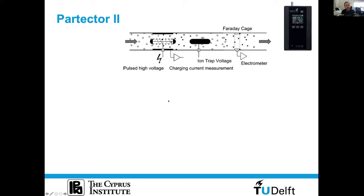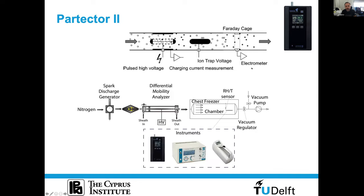Another instrument we have been testing is the Partector from Nanos. It is a very miniaturized instrument — slightly bigger than a pack of cigarettes. Inside, it has a corona charger that unipolarly charges all incoming particles, an ion trap or precipitator that is switched on and off to perform crude sizing of particles, and a Faraday cage electrometer. The Partector reports both the mean size and the concentration of the particles.